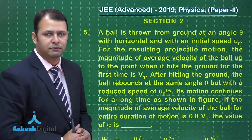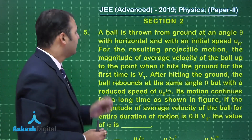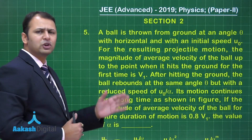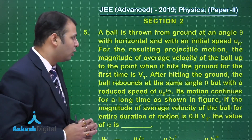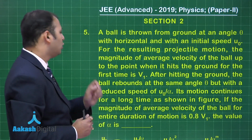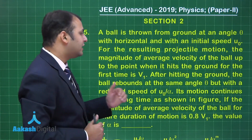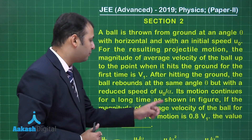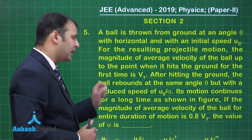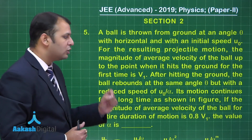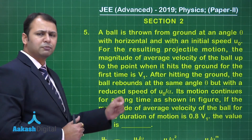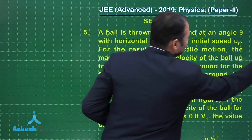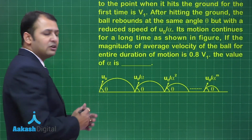The next question belongs to chapter motion in a plane, section projectile. A ball is thrown from the ground at an angle theta with the horizontal and with an initial speed u naught. For the resulting projectile motion, the magnitude of average velocity up to the point when it hits the ground for the first time is v1. After hitting the ground, the ball rebounds at the same angle theta but with a reduced speed of u naught upon alpha. Its motion continues for a long time. If the magnitude of average velocity for the entire duration is 0.8 v1, the value of alpha is to be found.